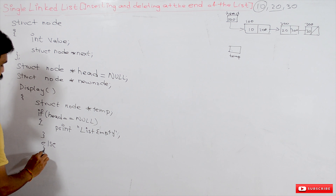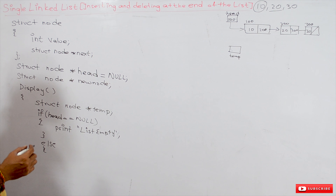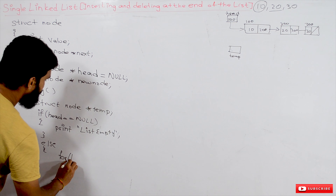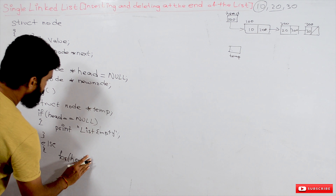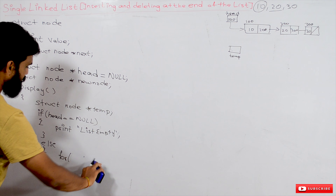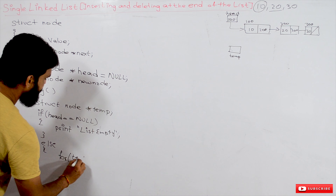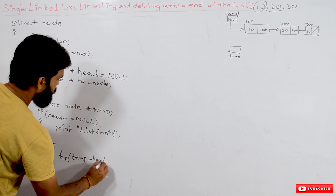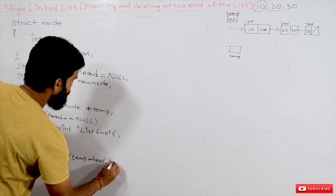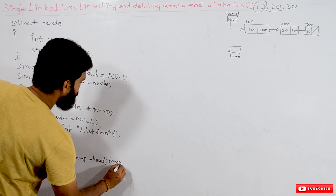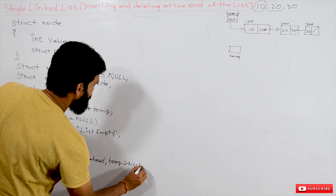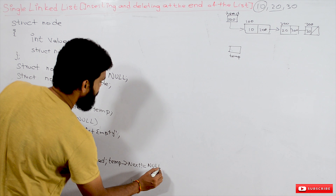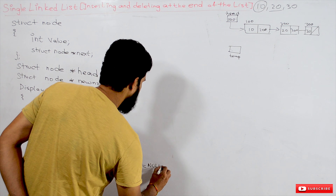Now we understand how to display elements in the list. The display function uses a temporary pointer variable of type struct node, which is initially uninitialized.